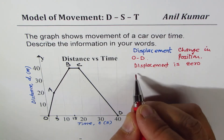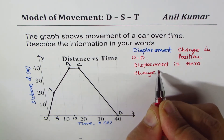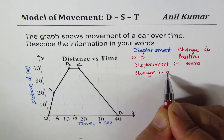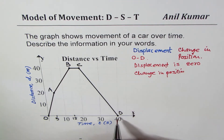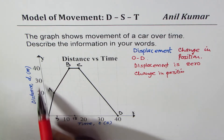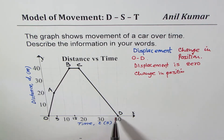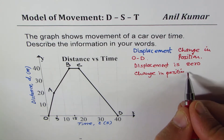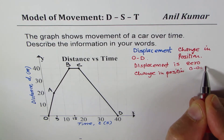Displacement is change in position. As far as the y-axis is concerned, the position is 0 at the start and 0 at the end. So the change in position is 0 minus 0, which equals 0.